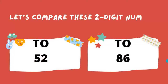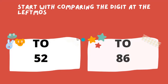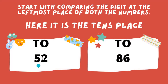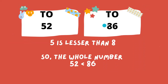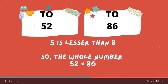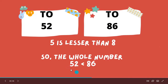Let's compare these two-digit numbers: 52 and 86. Start by comparing the digits at the leftmost place of both numbers — here it is the tens place. Five is lesser than eight, so the whole number 52 is lesser than 86. We can also write this using the less than sign: 52 is lesser than 86.